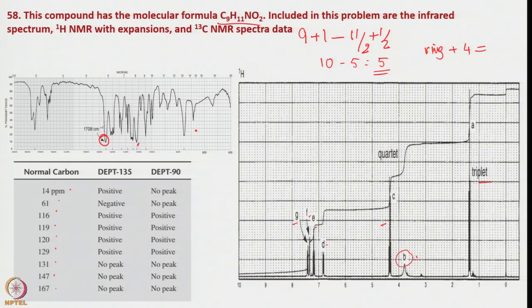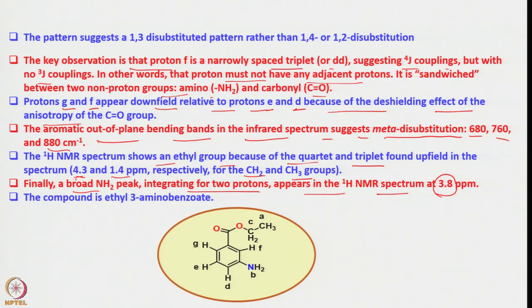The NH2 group is confirmed by the broad peak in the 1H NMR. Going back and analyzing the aromatic region expansion shows the interactions of these nuclei giving different multiplicities for each signal. This confirms the structure of ethyl 3-aminobenzoate.